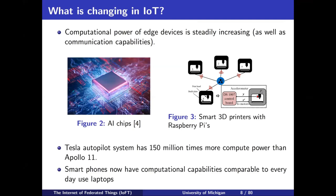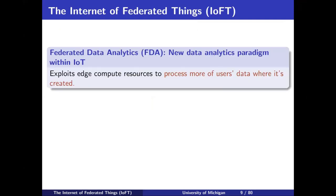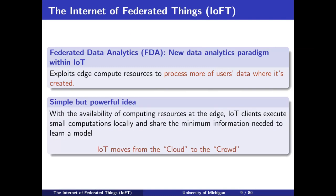This opens a new opportunity. It allows us to process more of our data where it is created. This is the key idea of federated data analytics — with computational power at the edge and AI chips infiltrating the market, we can process more data where it is created. This is the very simple idea of the Internet of Federated Things: to move some of our data processing from the centralized cloud to the edge.